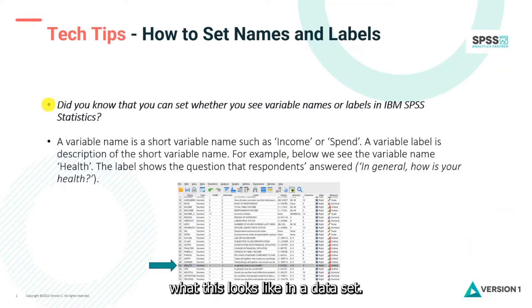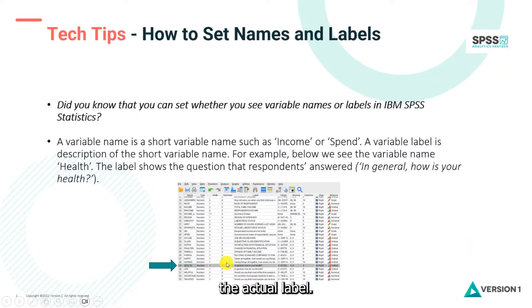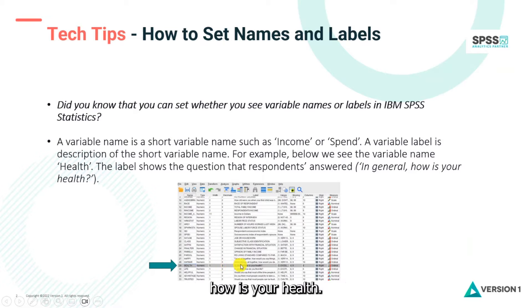Let me show you what this looks like in a data set. Do you see where I have the green arrow? We have a variable called 'health,' and the actual label — the question — was 'In general, how is your health?'